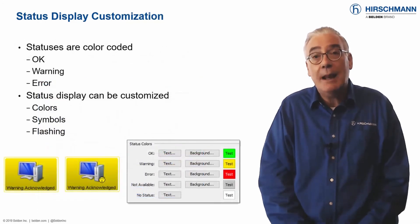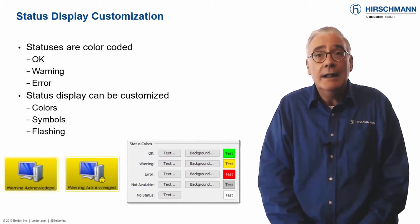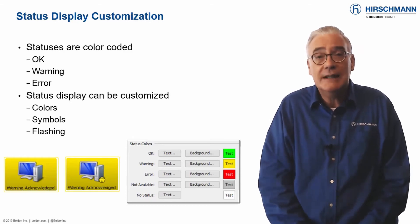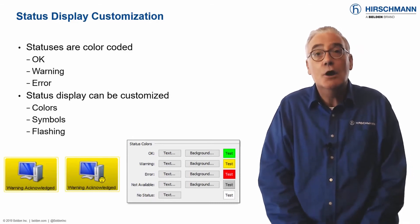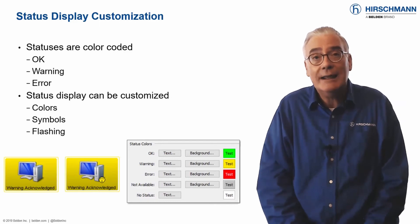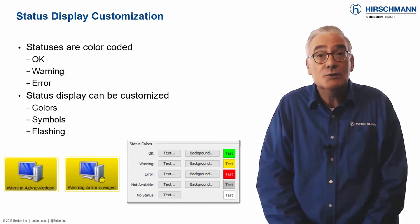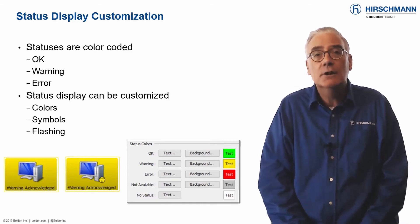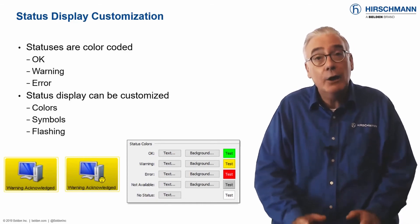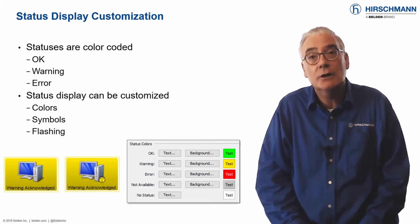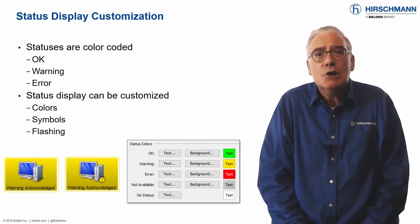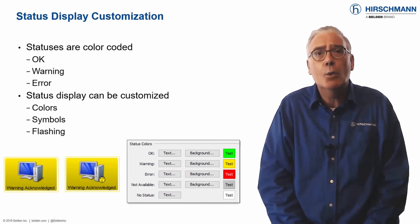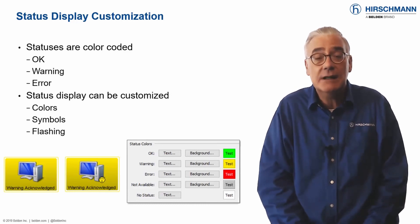Status display provides an immediate visual indication of a problem. Industrial HiVision provides four status levels, each represented by a color. Transparent or gray equals OK. Yellow equals warning. Red equals error. Green equals OK but previous status not acknowledged. This last option is used to make the operator aware of any faults which may have fixed themselves.